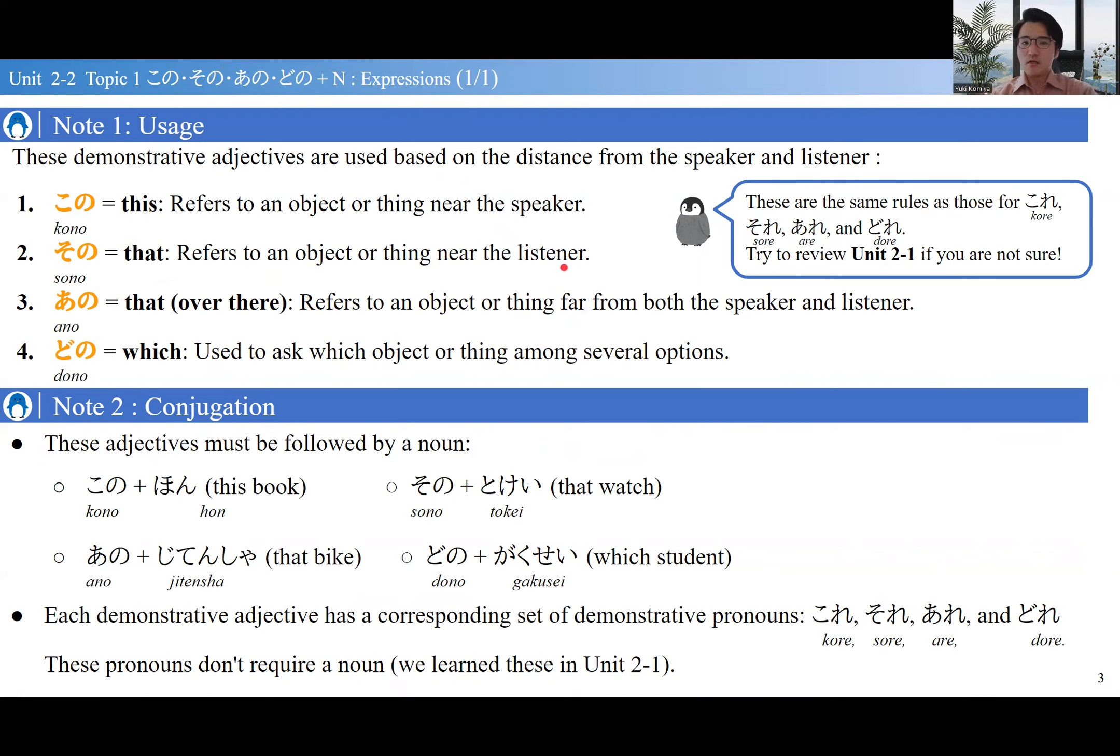So if I say その時計, 'that watch,' that's the watch you are holding—far away from me, the speaker, but close to you, the listener. あの, 'over there,' is something far away from both the listener and the speaker.